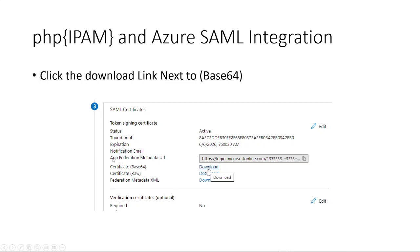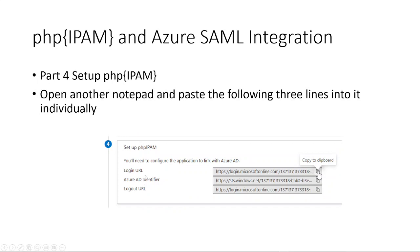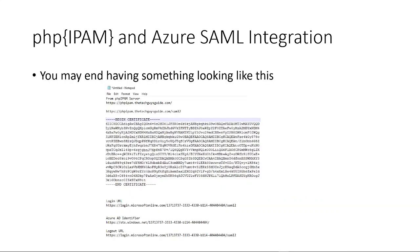Under the third option, we want to download the Base64 certificate. We want to open it and save it into the same notepad where we've been keeping our links. Next, on part four, we need to copy the Login URL, the Azure AD Identifier, and the Logout URL. In PHP IPAM, note that these fields are positioned at the top. Copy each one and paste it into our notepad. It should look something like this — this is my working version.